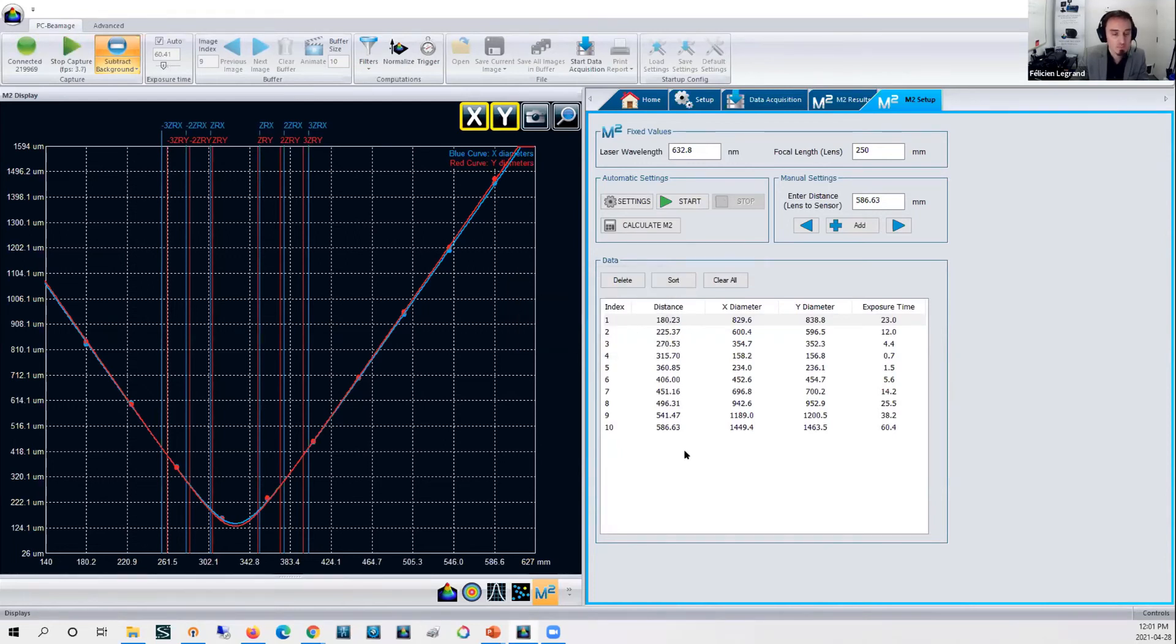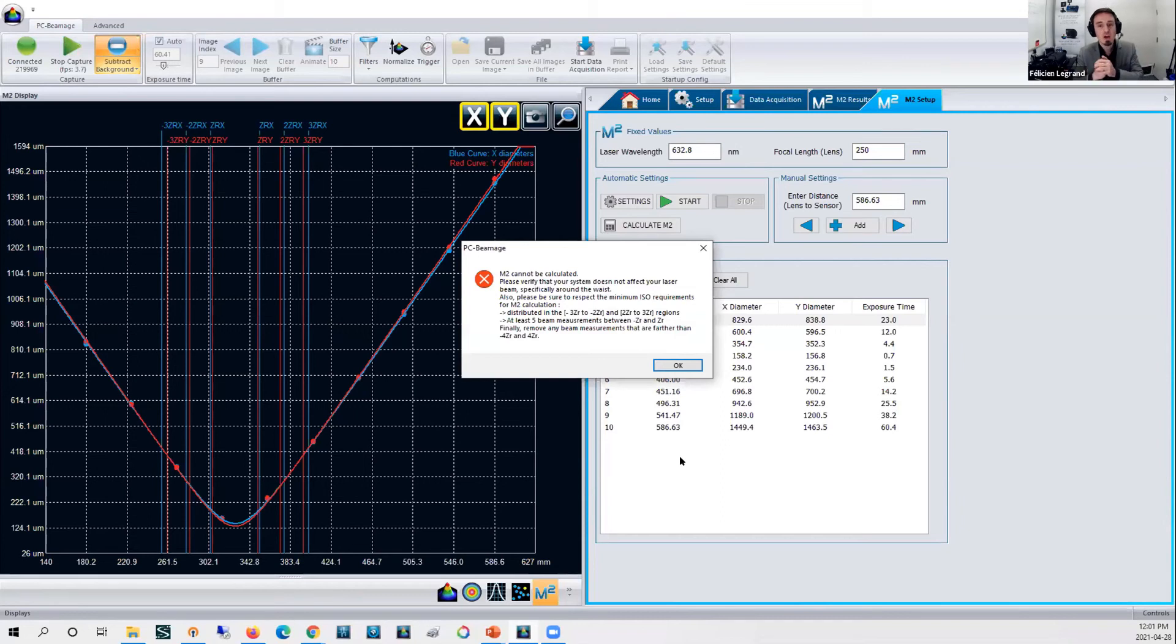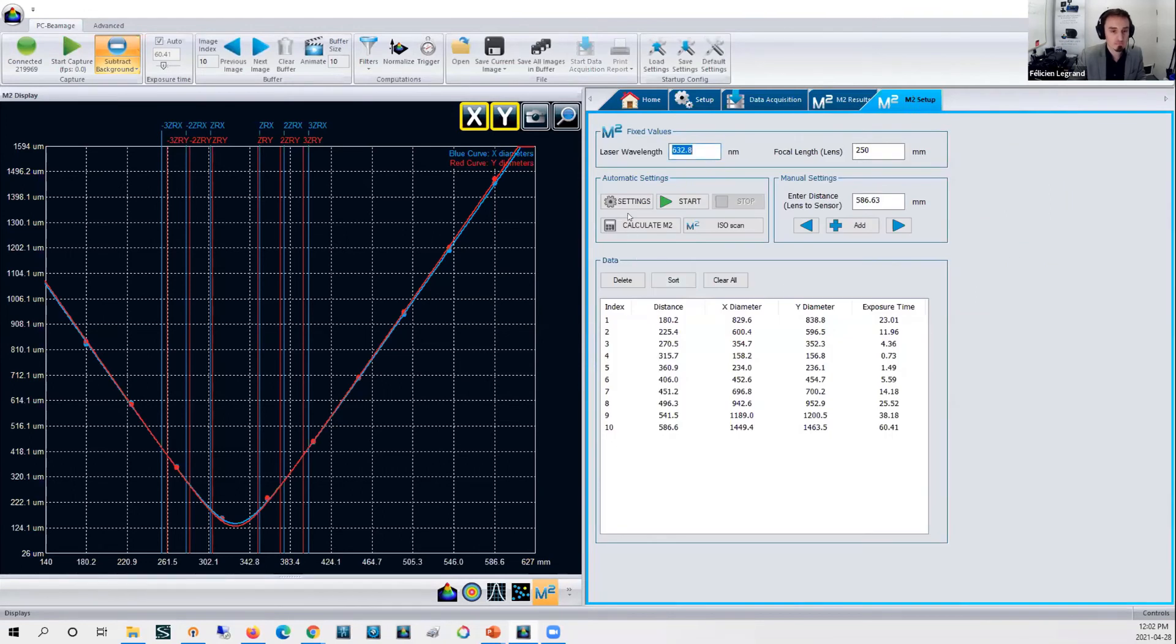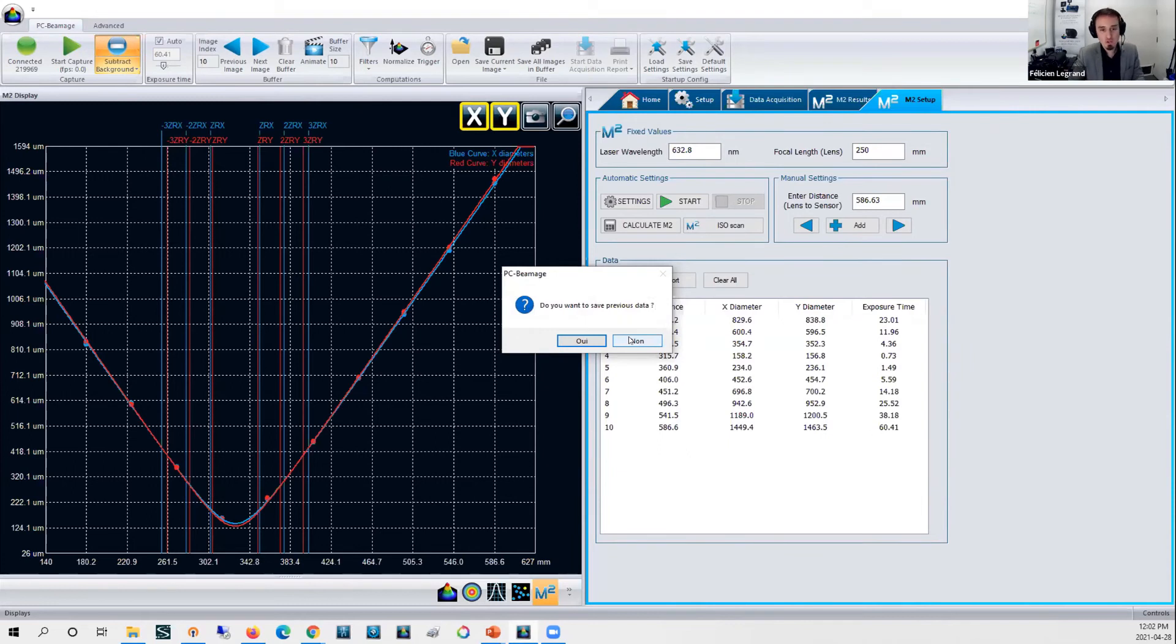It's telling me that I do not have enough points to be ISO compliant. The ISO standard tells you that you need at least five points of measurement at your Rayleigh range between minus one plus one Rayleigh range, and another set of five points distributed external to minus two plus two. Long story short, what I'm going to do is tell my software, okay, provide me an ISO scan now that you know where is my Rayleigh range. Do automatically an ISO scan.